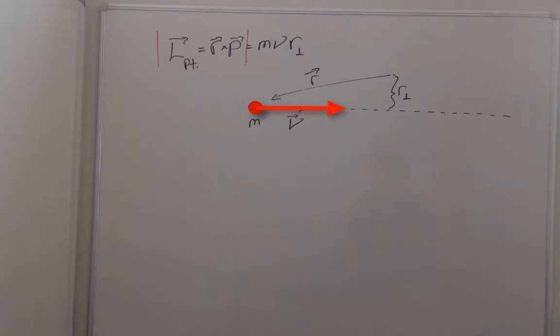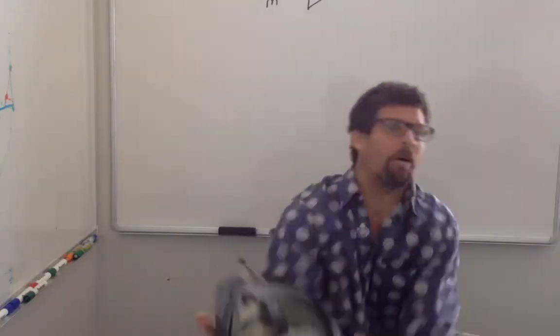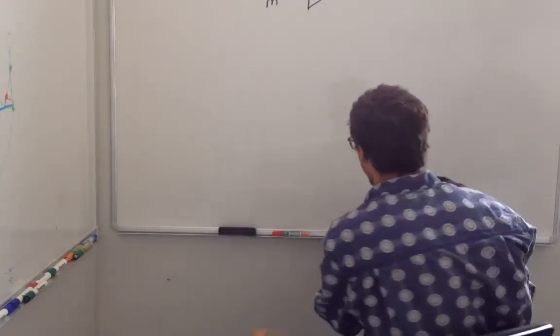If I am placed so the mass hits me directly in my center, there will be no rotation. However, if I am located away from the path of the mass, when it hits me, it will cause me to rotate.